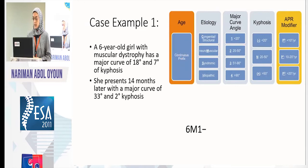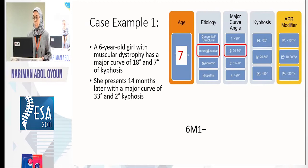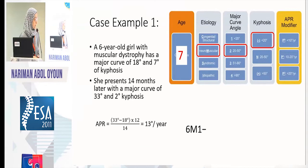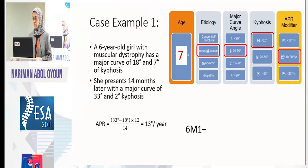She comes back 14 months later — one year and two months — so she takes a seven for age. Etiology is still M. Major curve has progressed to 33, so she takes a two. Kyphosis remains in the negative range. The APR modifier: progression divided by time gives approximately 15 degrees per year, placing her in P1 (10 to 20 degrees progression per year). Her second classification is 7M2-minus-P1. It's a complex language, but when learned, one code communicates everything — including whether the curve is progressive.